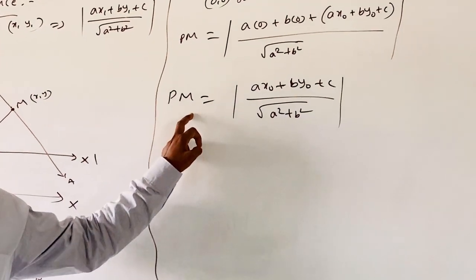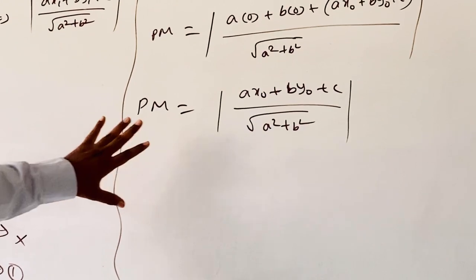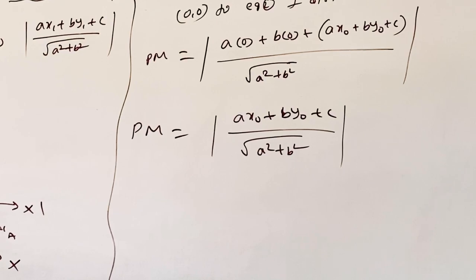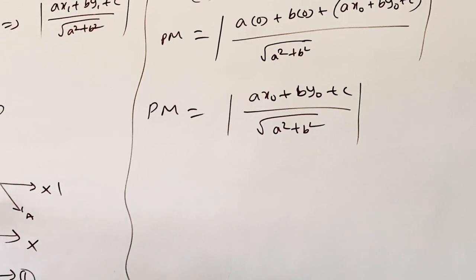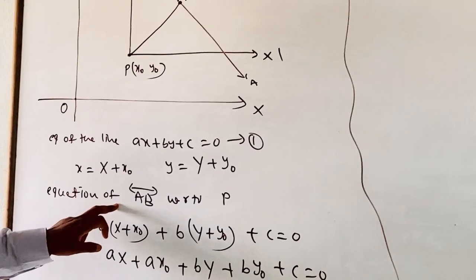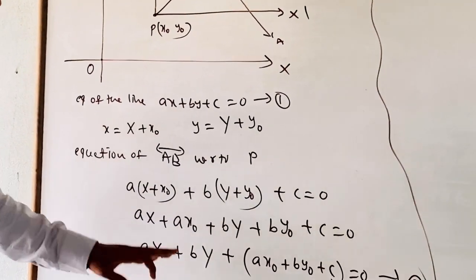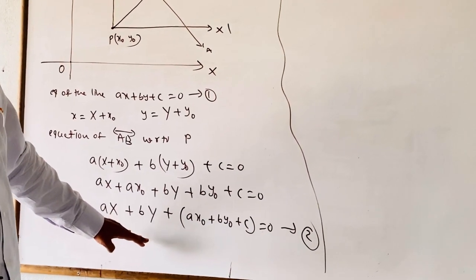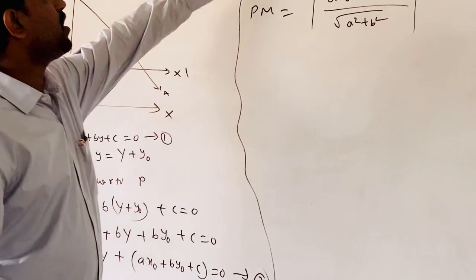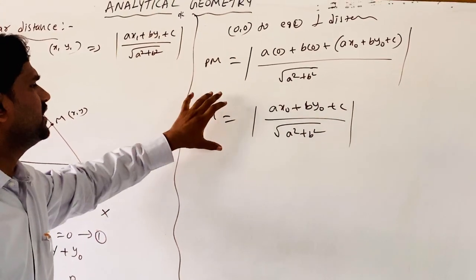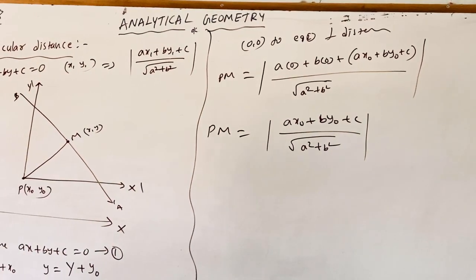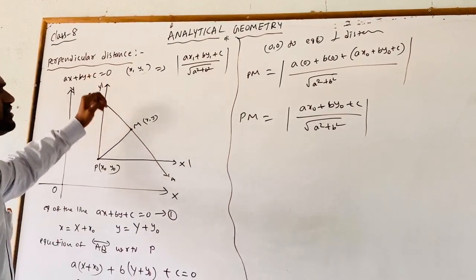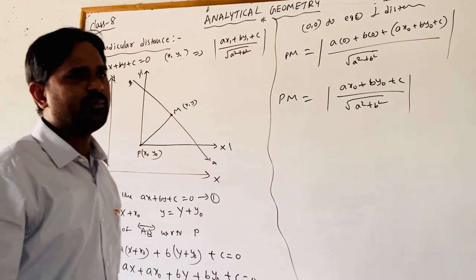We already wrote this condition in the normal form of a line. Similarly, by using the translation of axes — without changing the direction but changing the origin to another point — and substituting in Equation 1, we get a standard form of the new equation. By finding the perpendicular distance from the origin to Equation 2, we get the perpendicular distance formula.